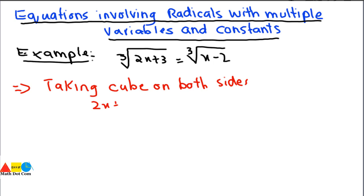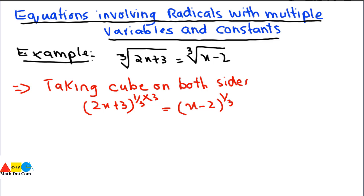Cubing both sides: the cube root of (2x + 3) is equal to the 1/3 power, and the cube is 3, so (1/3) × 3 = 1. Similarly on the other side, the cube root of (x - 2) raised to the cube cancels out, giving us the simplified equation: 2x + 3 = x - 2.